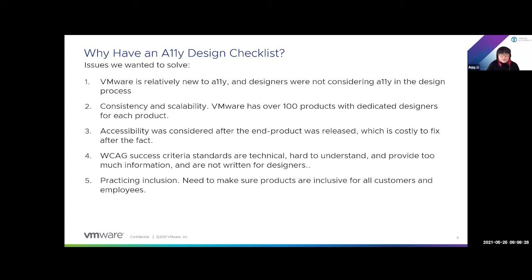Number three: accessibility was often considered at the end of the product release cycle, which is costly to fix after the fact — redesigning and having developers recode issues is very time-consuming and costly. Number four: WCAG criteria standards are written very technically, they're not written for designers, there are a lot of guidelines, not all of them always apply, and they're hard to understand even for those who are highly technical. And last, we wanted to practice more inclusion — making sure people are aware of what digital accessibility entails, both internally with employees and toward customers.